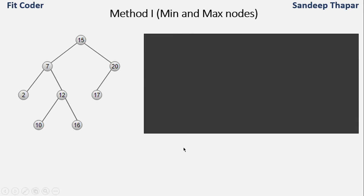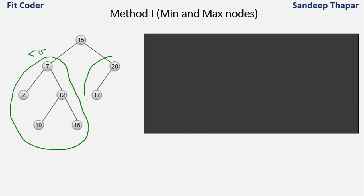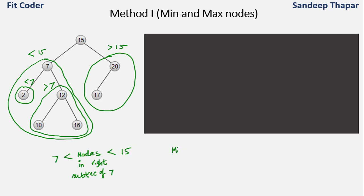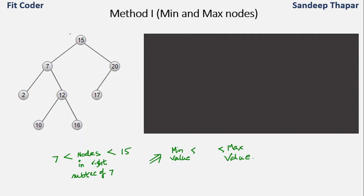The first method makes use of min and max nodes. For this tree, the left subtree of 15 should have all nodes less than 15, and the right subtree should have all nodes greater than 15. Similarly, the left subtree of 7 should have all nodes less than 7. For the right subtree of 7, all nodes should be greater than 7 but also less than 15, since it is a left subtree of 15. So for each node we have a min and max value range. For the subtree rooted at 7, nodes should be less than 15.